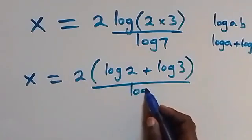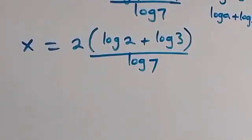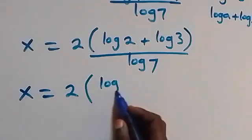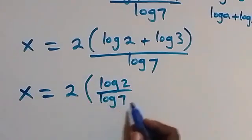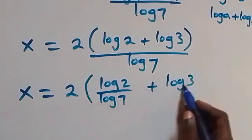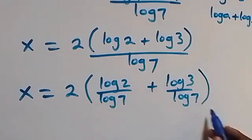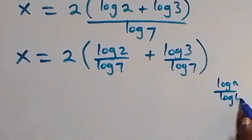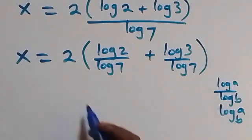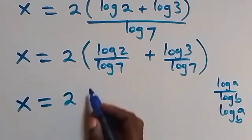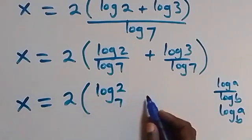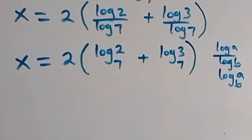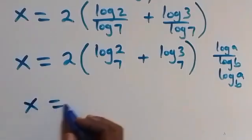So this becomes x equals to 2 multiplied by (log 2 plus log 3) over log 7. We can separate this into two fractions: x equals to 2 multiplied by (log 2 over log 7 plus log 3 over log 7). Then applying the change of base formula, log a over log b equals log a to base b, this becomes x equals to 2 multiplied by (log base 7 of 2 plus log base 7 of 3).